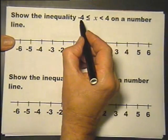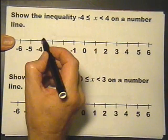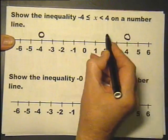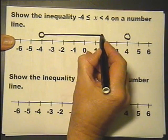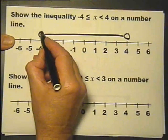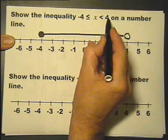x is between minus 4 and plus 4, so that shows that bit. Includes the minus 4 but doesn't include the 4.